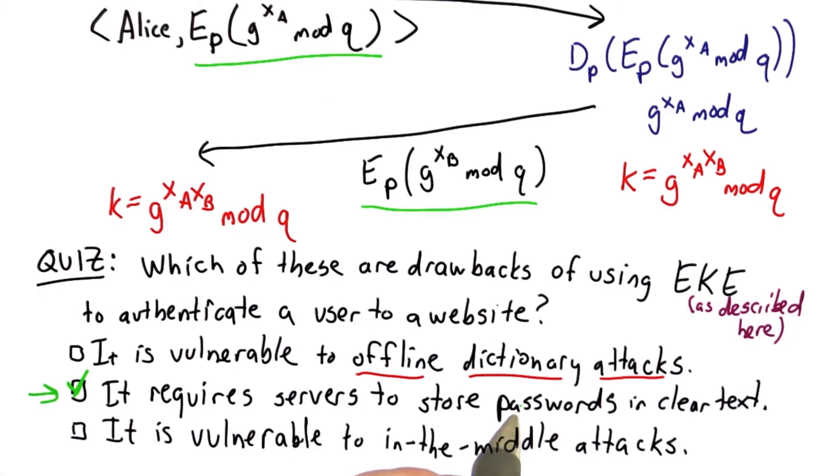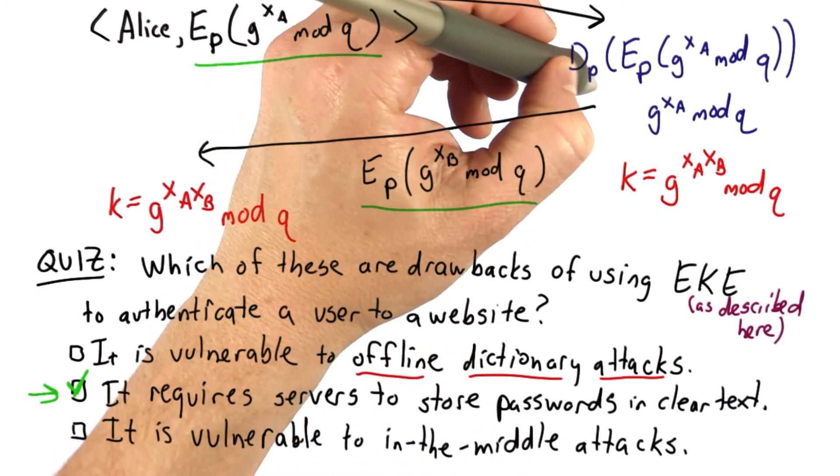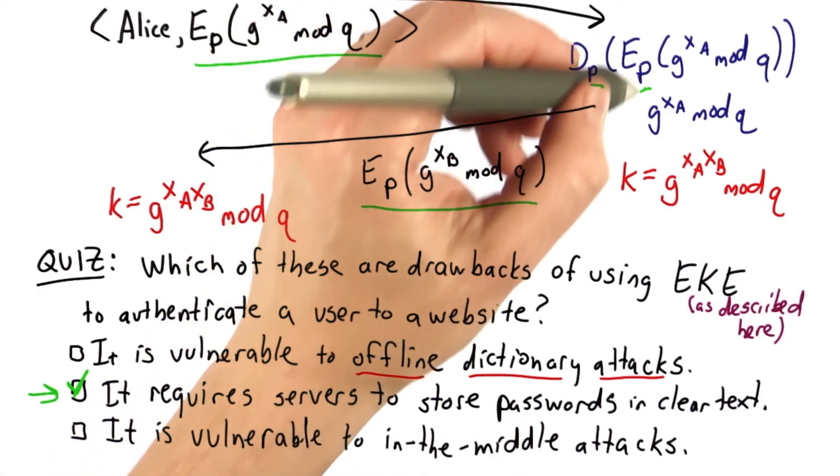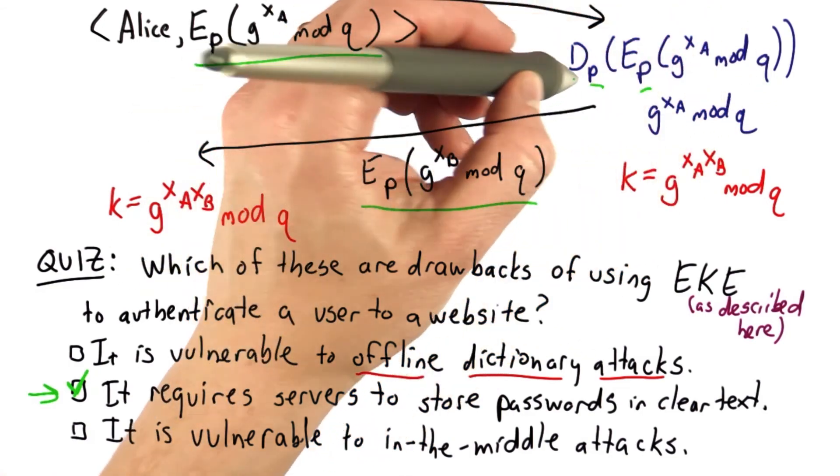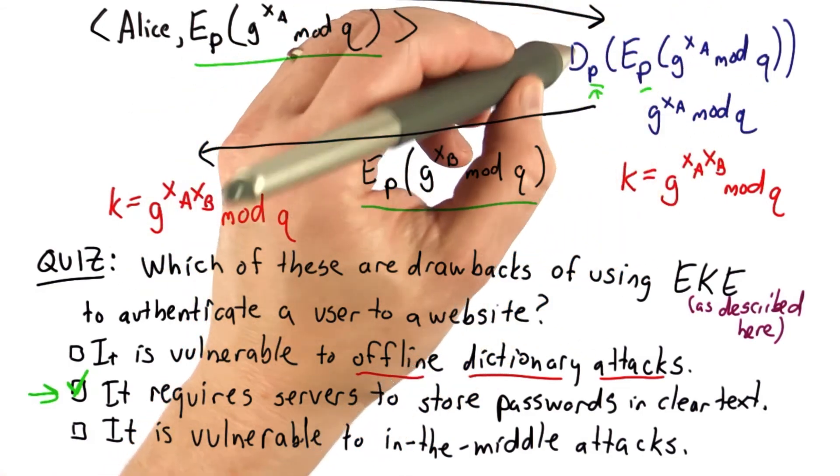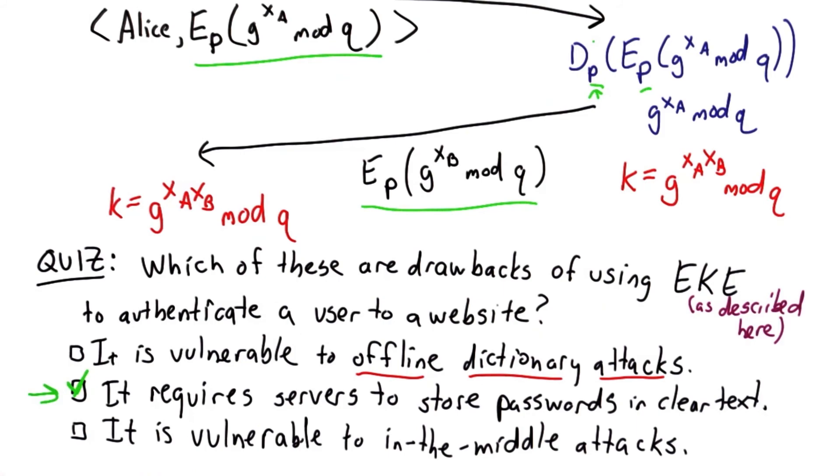The main drawback of this protocol is it does require the server to keep the password. In order to decrypt this message encrypted with the password, the server needs to use the password to do decryption. So this means the server would need to store all the passwords in cleartext. This is highly undesirable. If the server was compromised, all the passwords would be lost.